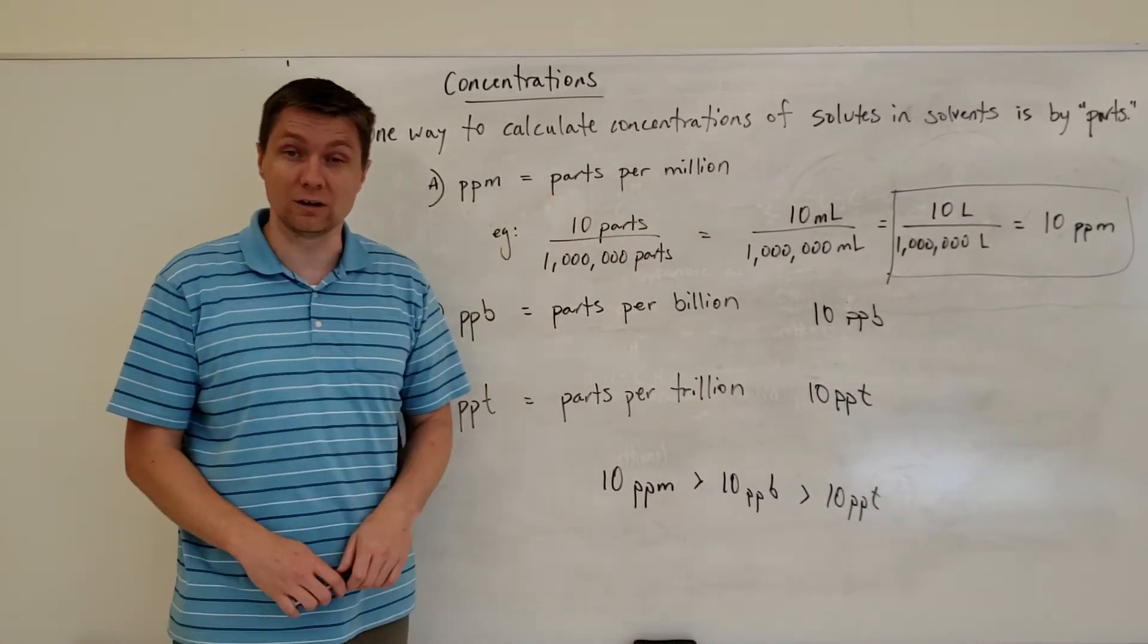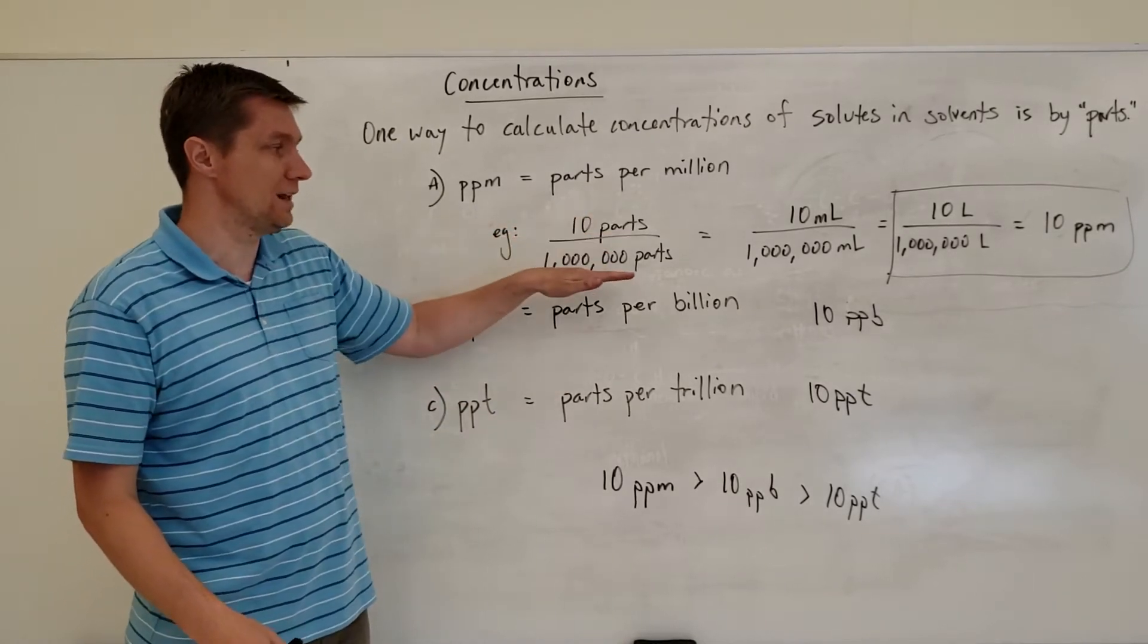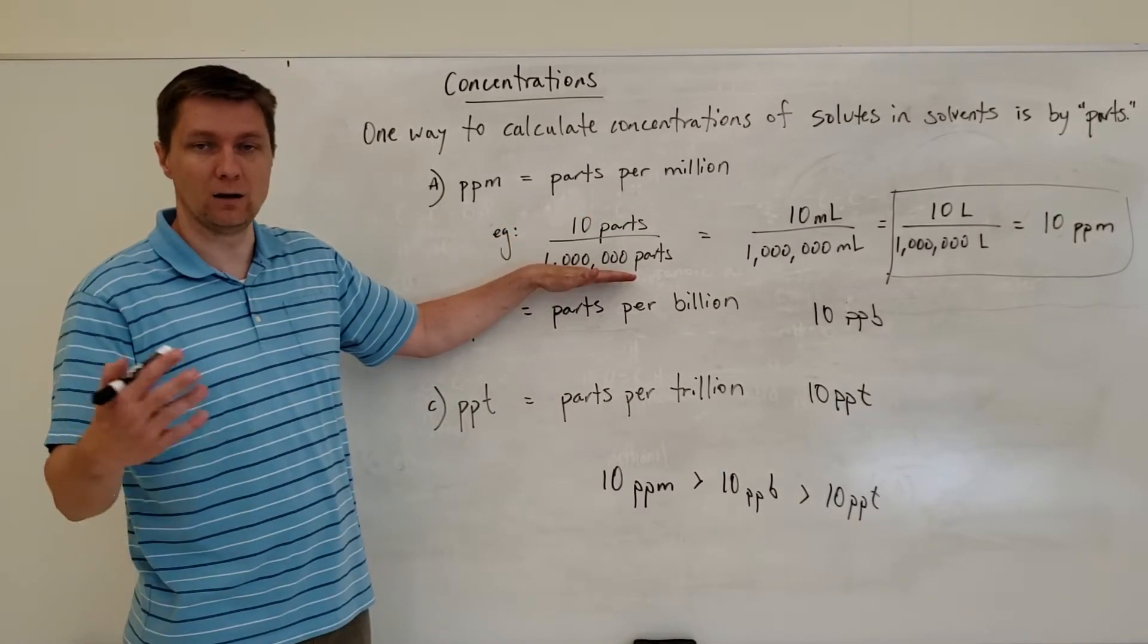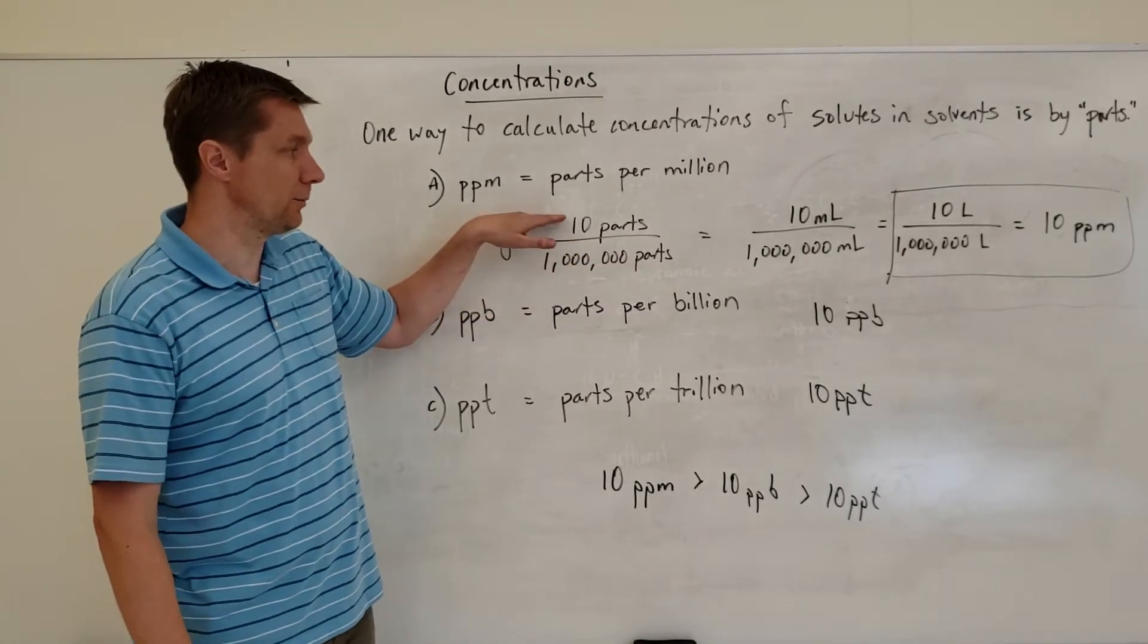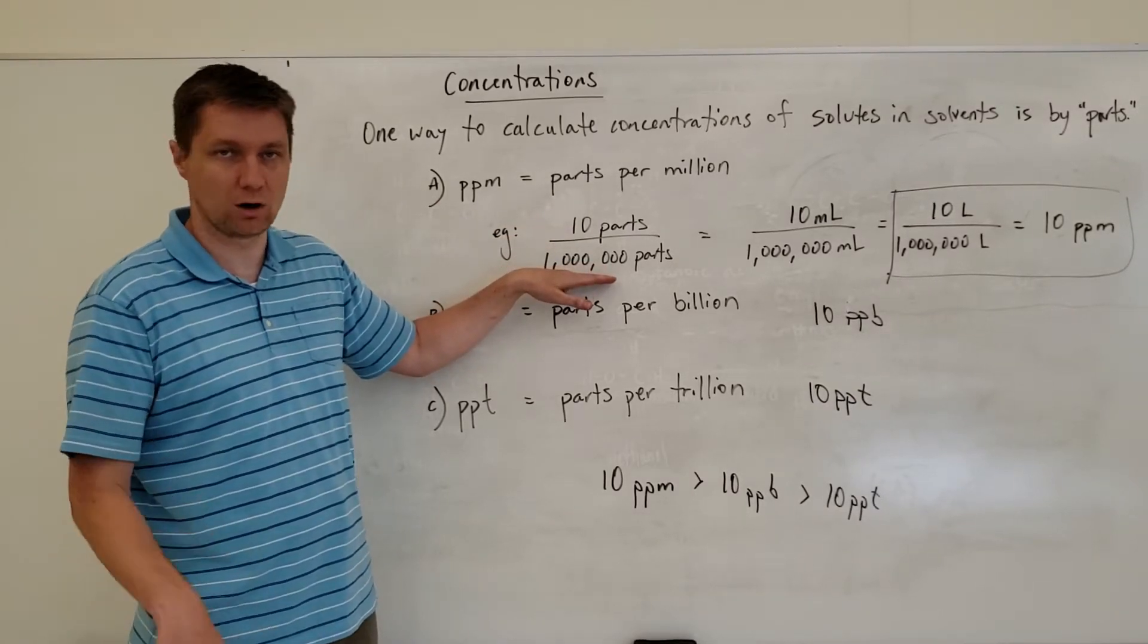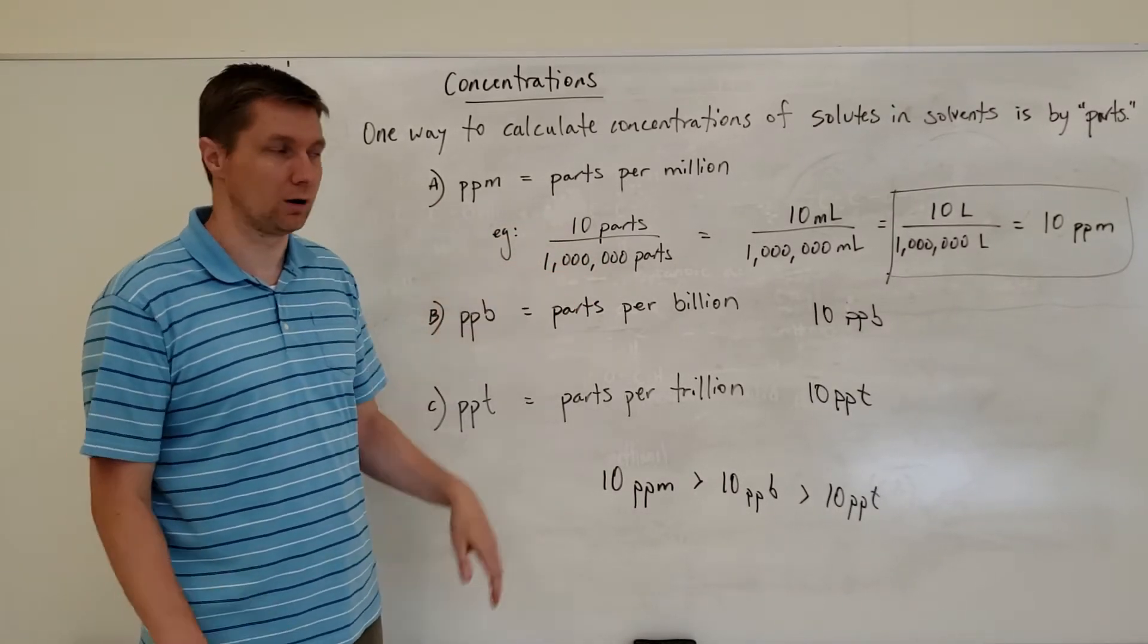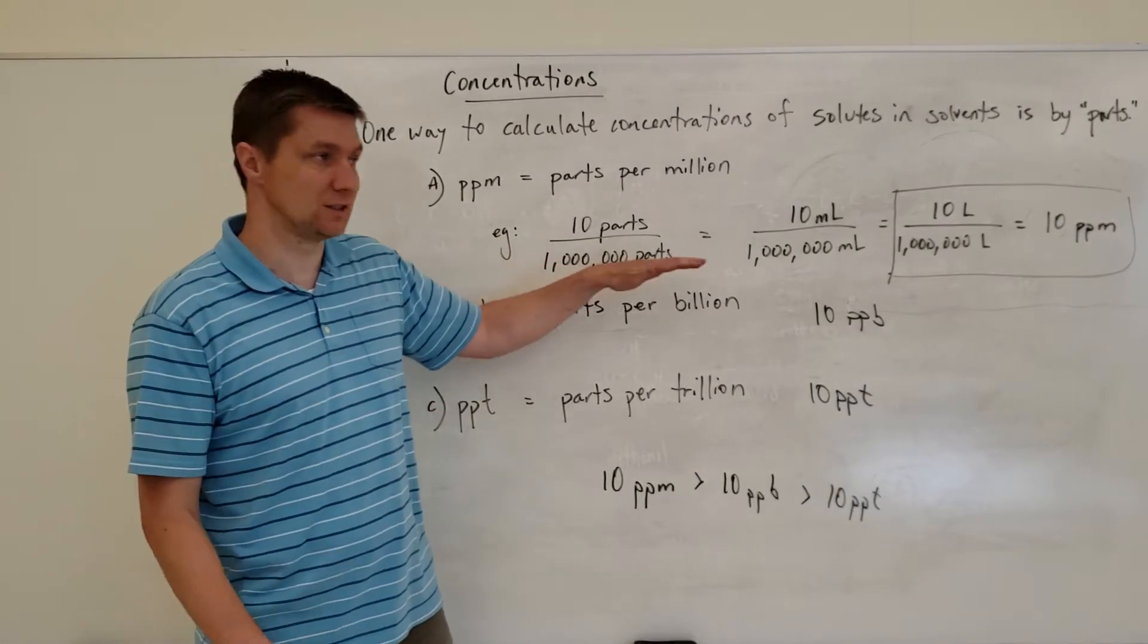When we're talking about parts per million then all that means is that I have a certain number of parts in a million parts of a particular solute dissolved in a solvent. So my solute would be up here on the top, ten parts dissolved in my solvent, say water, a million parts of water.